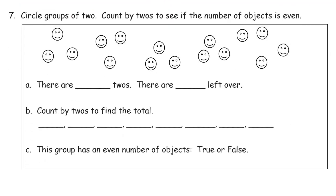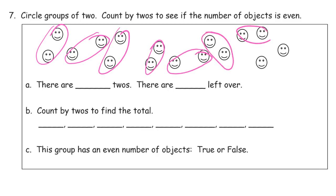Circle groups of two. Count by twos to see if the number of objects is even. Two, two, two, two. Let's compare up there. Pair, pair, pair. All right. Well, everyone's paired up, so it's going to be even. So, how many twos are there? There's one, two, three, four, five, six, seven. There's eight of them. There are eight twos. And there are zero left over.